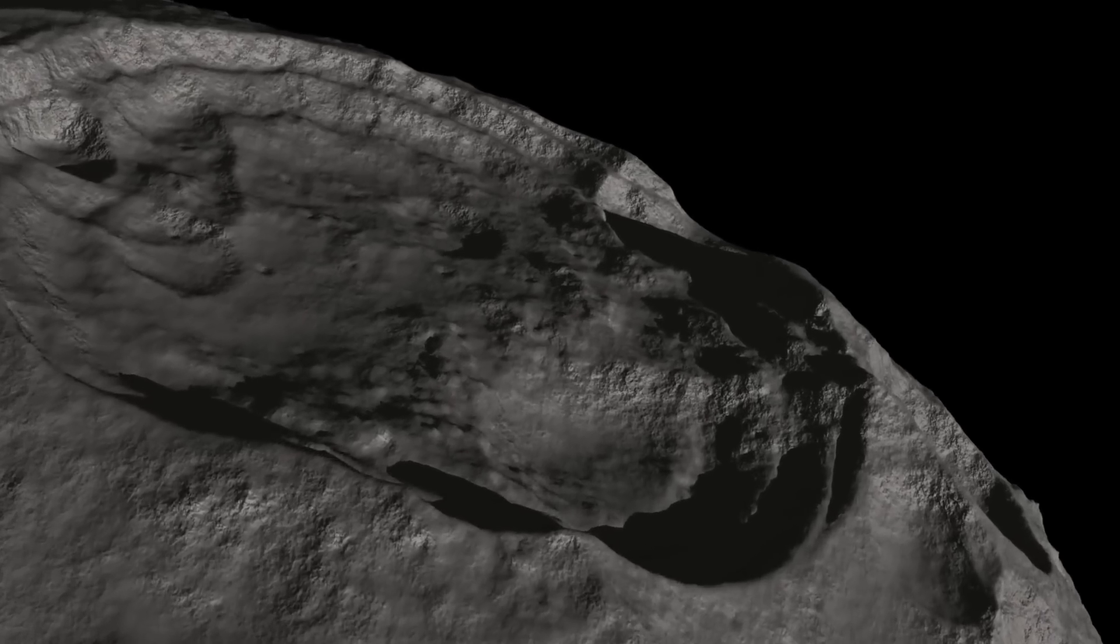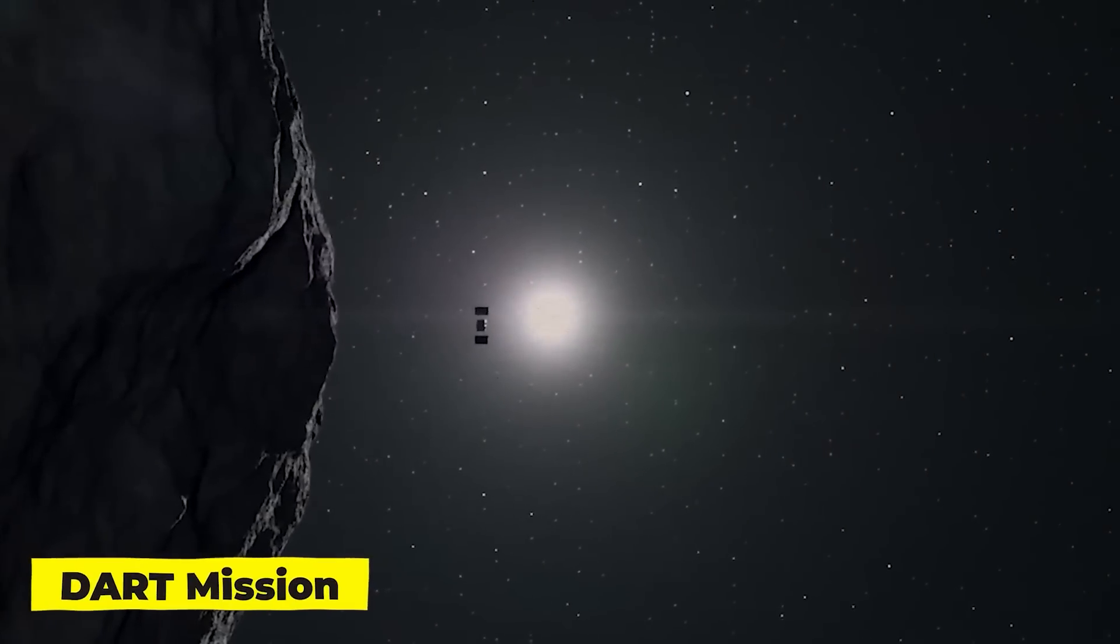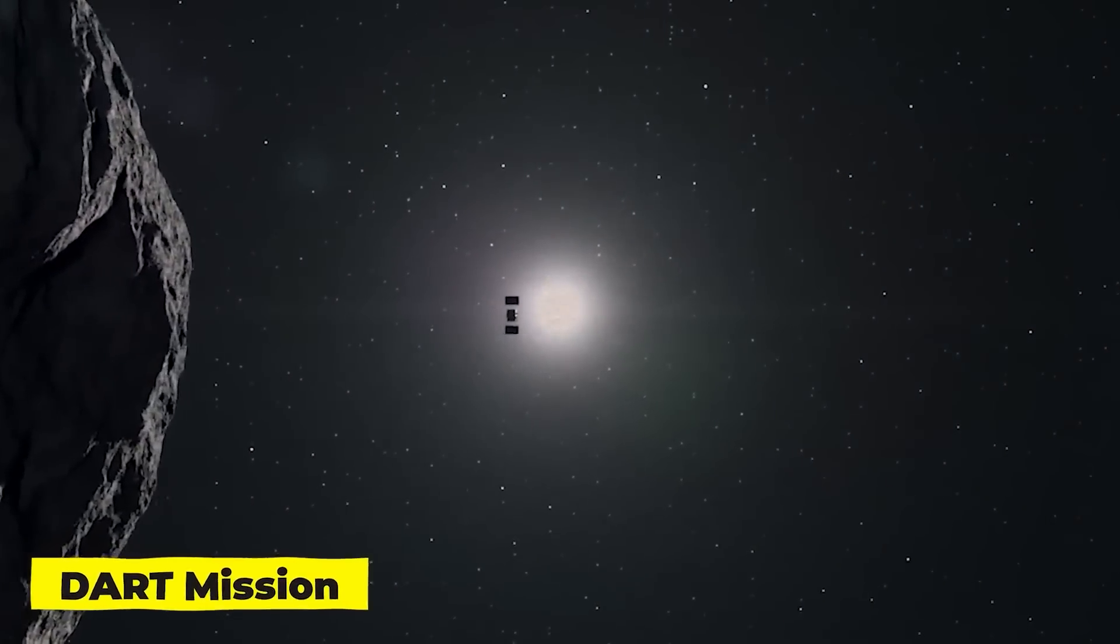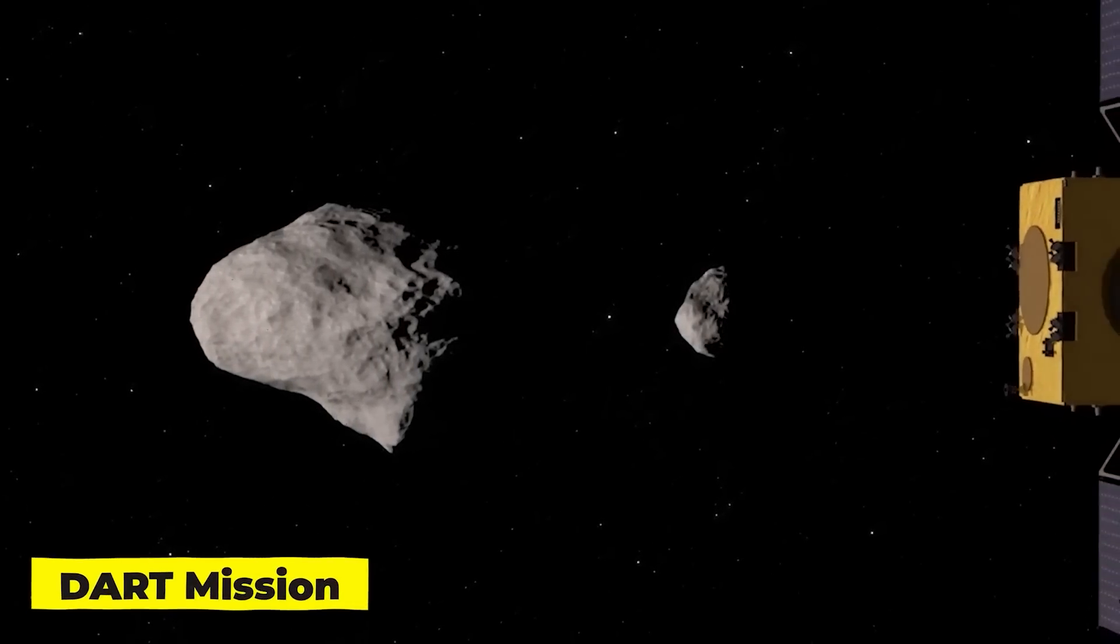The asteroid moving effort by NASA was a huge success. The project, known as the Double Asteroid Redirection Test or DART, was humanity's initial attempt to deliberately nudge a celestial object.